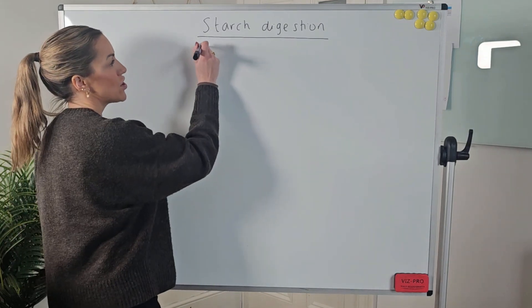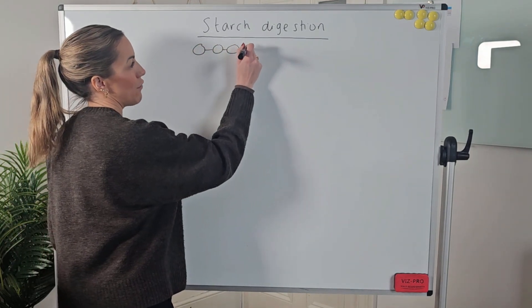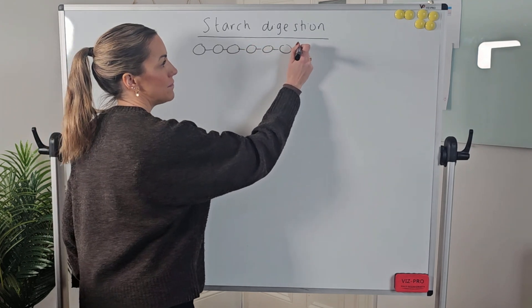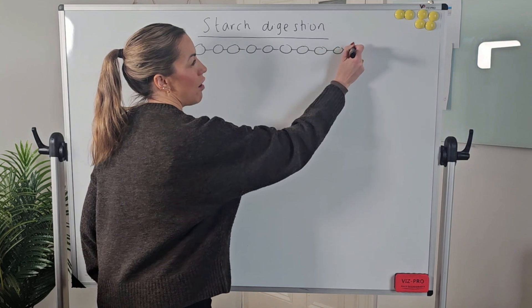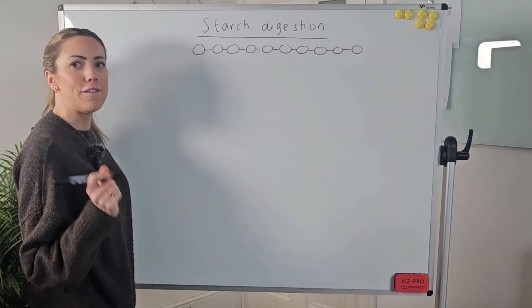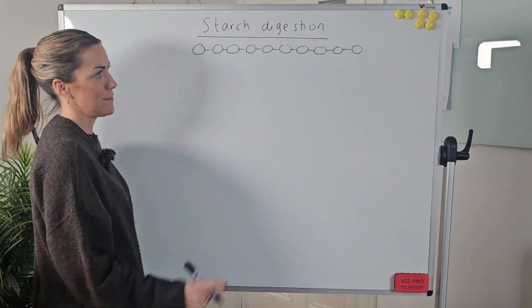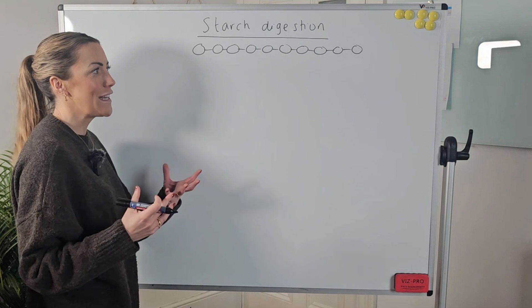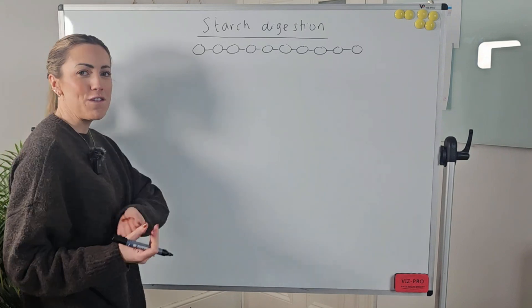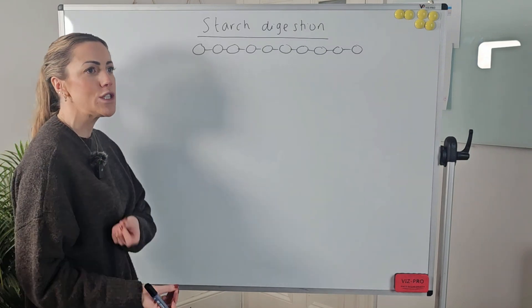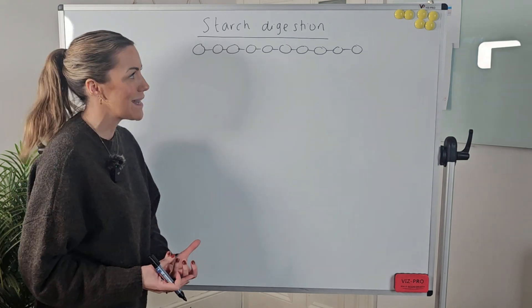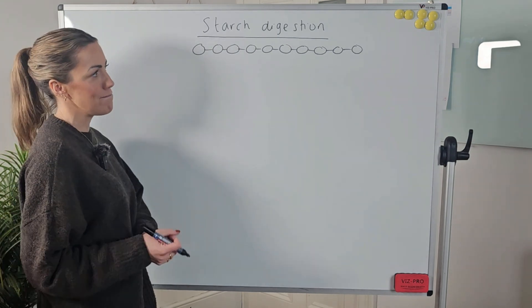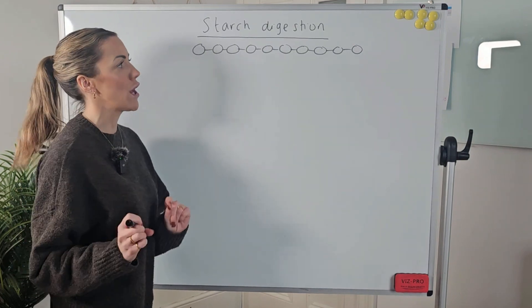So starch is obviously a polysaccharide, so it's a polymer made out of many alpha-glucose monomers. It's bigger than this in reality, but I can't draw it fully. You'll remember as well that you've got the helical amylose, you've got the branched amylopectin, but it's a polysaccharide made from many alpha-glucose monomers.